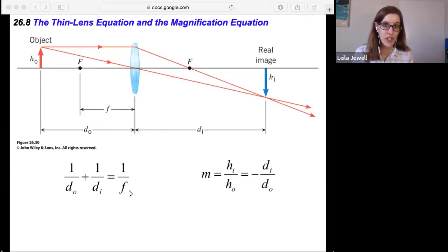It's true for lenses as well. So DO, as a reminder, is the object distance. DI is the image distance, and F is the focal length. That's the distance from the focal point to the lens, and that's symmetric on either side of the lens.